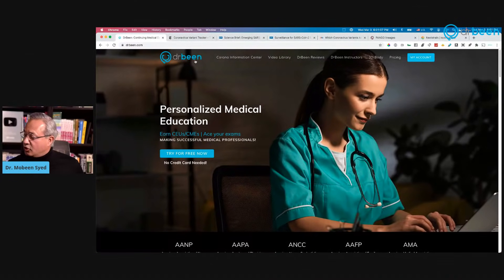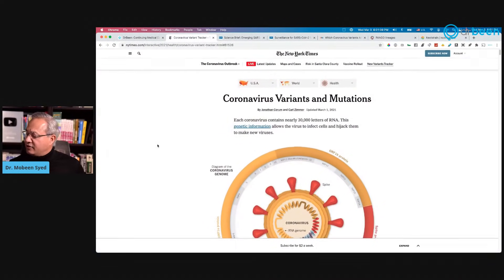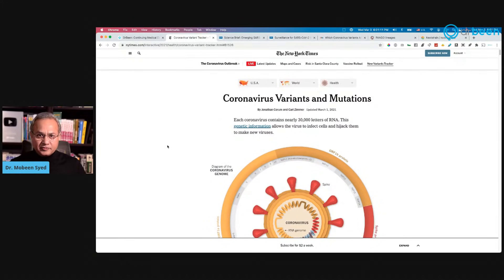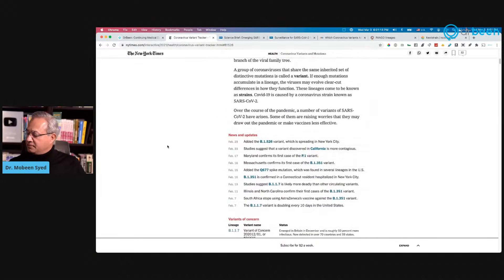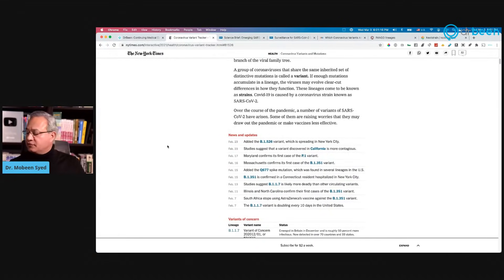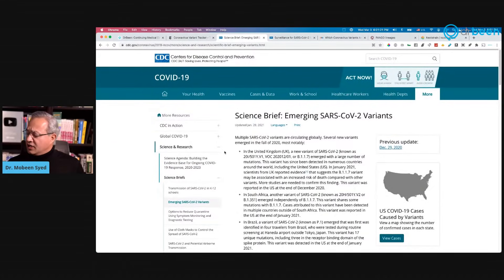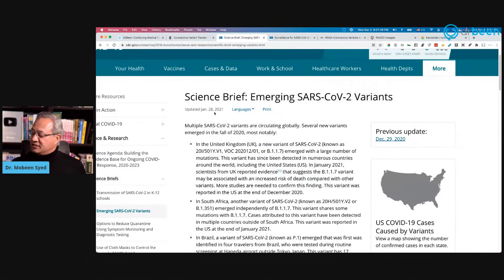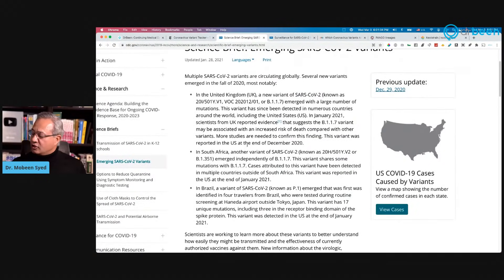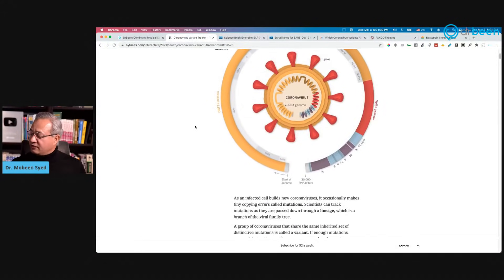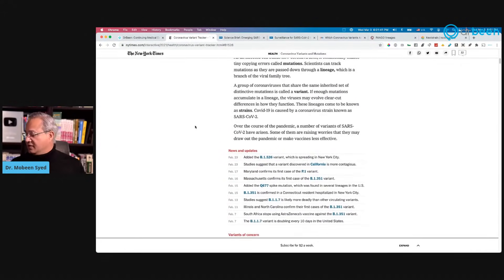This is drbeen.com. This New York Times article here is beautiful, I have the link in the description. Compare that to this rather barren and less useful CDC article about variants. This is January 28, Science Brief Emerging SARS-CoV-2 Variants. They only talk about UK, South Africa, and Brazil.